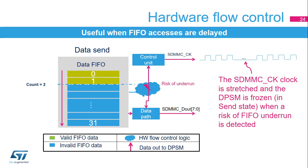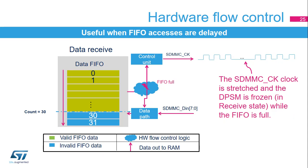The hardware flow control function is used to avoid FIFO underrun when DPSM is in send mode and overrun errors when DPSM is in receive mode. The hardware flow control logic stops the SDMMC CK pin signals and freezes the DPSM when a risk of underrun or overrun is detected. In send state, the SDMMC CK pin clock signal is stretched and the DPSM is frozen to prevent any FIFO underruns. The clock and DPSM are restarted when the FIFO is half-full or all the last transfer data is available in the FIFO. In receive state, the SDMMC CK clock is stretched and the DPSM is frozen while the FIFO is full. The clock and DPSM are restarted when the FIFO becomes half-empty.